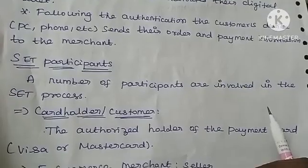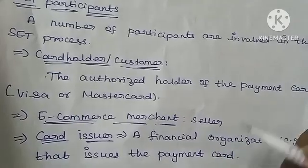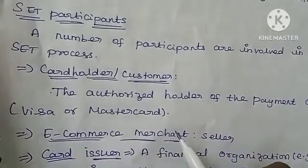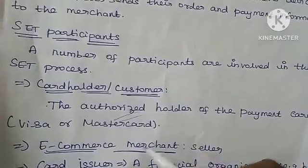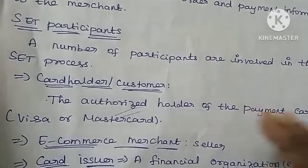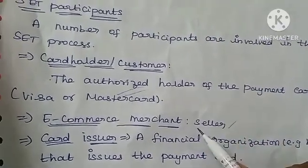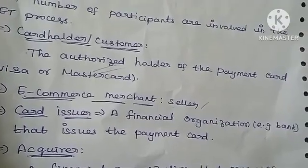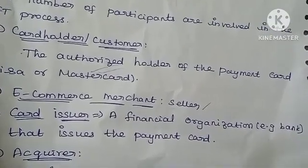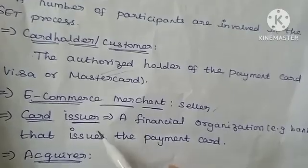Now let's look at the SET participants. First is the cardholder or customer — a person who pays for transactions online through Visa or Mastercard. Next is the e-commerce merchant — the seller in the transaction. Next is the card issuer — a financial organization such as a bank that issues the card.